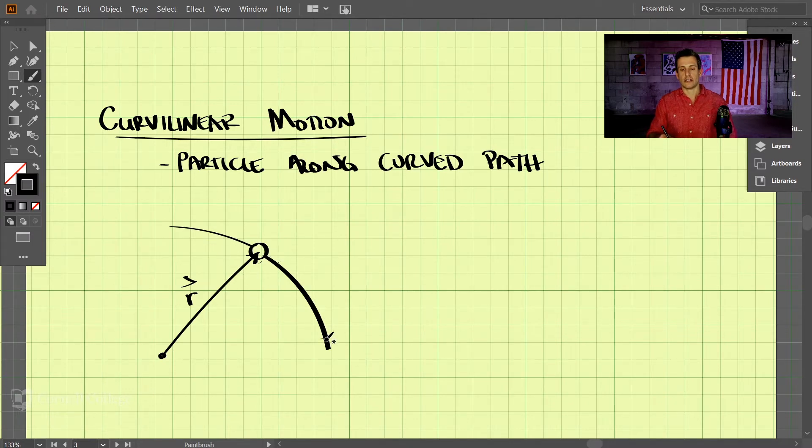Let's say it moves along this path over time and moves to a new position. We'll call the new position r prime.